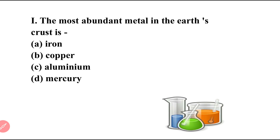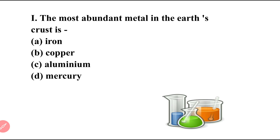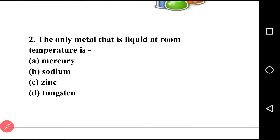One by one, a question will come on screen. You first solve it, then listen to my answer. First question: the most abundant metal in the Earth's crust is? There are four options: iron, copper, aluminium, mercury. The right answer is option C, that is aluminium. The most abundant metal in the Earth's crust is aluminium.